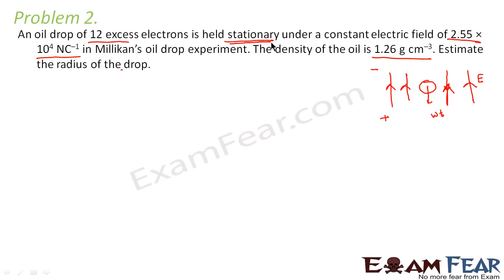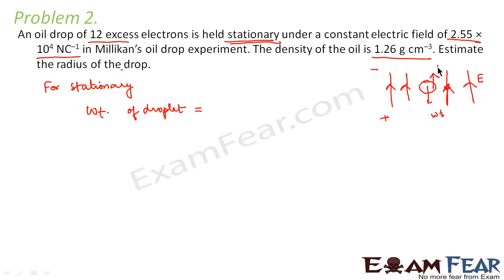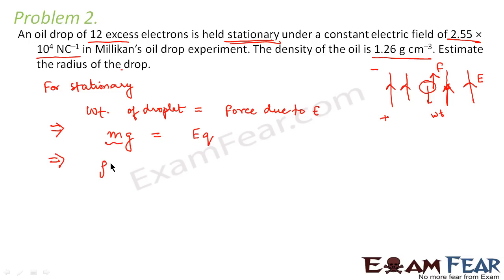The question says the drop is held stationary. For the drop to be stationary, the force acting downward must equal the force acting upward. The downward force is the weight of the droplet, which must equal the upward force due to the electric field. So mass times g equals electric field times charge. The charge on the droplet equals n times the electronic charge, in accordance with quantization of charge.